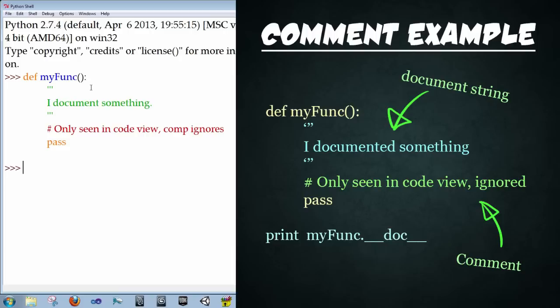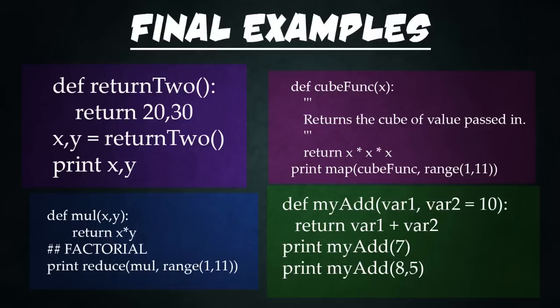So now we're going to type in a special command that will allow us to see the documentation string. So type in print myFunc dot underscore underscore D-O-C underscore underscore, enter. And now we can access the document for that specific function we created. And it says, I documented something. Cool.